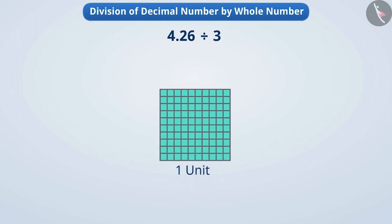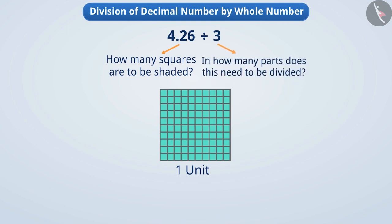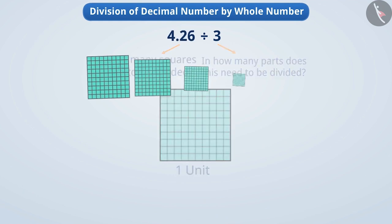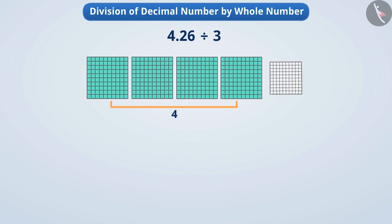If we consider a square as a unit, then the first number, 4.26, tells us how many squares we have to shade, and the second number, 3, tells us in how many equal parts we have to divide the shaded parts. To denote 4.26, we will shade four full squares and two tenths and six hundredths of one square.